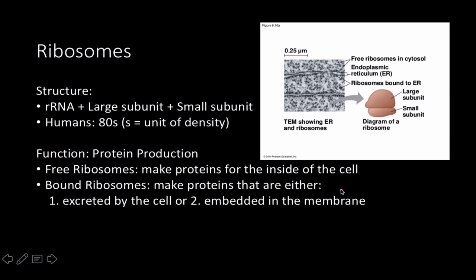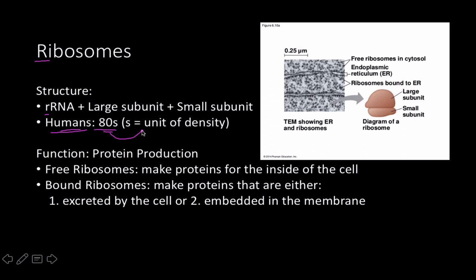Moving along with the theme of the central dogma, let's talk about ribosomes — the site of translation. Structurally they're made up of two parts: a protein and an RNA called ribosomal RNA (rRNA), forming a large subunit and a small subunit. In humans they tend to be around 80 Svedbergs, a unit of density. What's important is that they're structurally unique — not the same as bacterial ribosomes. Their function is to produce proteins, and there are two types: free-floating ones in the cytosol that make proteins for inside the cell, and bound ribosomes attached to membranes like the endoplasmic reticulum, which make proteins for secretion or embedding into the cell membrane.